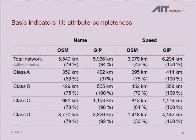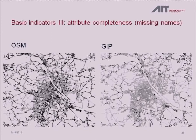For attribute completeness, we checked names and speed values. Generally the authoritative network is more complete, though it doesn't mean it's correct — they put in values like 'unnamed street' where a street doesn't have a name, whereas OpenStreetMap probably wouldn't put anything. Higher class roads are better covered in both. Looking at missing names spatially: the authoritative street network is pretty much completely named inside Vienna, while OpenStreetMap still has some unnamed streets, especially in industrial zones where it's probably difficult to find the street name information.